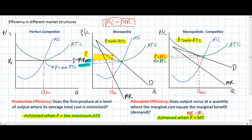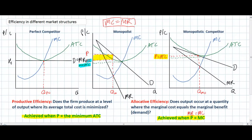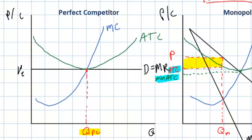Because there are barriers to entry and products produced by imperfect competitors are differentiated, firms in those markets are not forced to achieve productive efficiency. Now let's examine allocative efficiency. For the perfectly competitive firm, at the profit-maximizing quantity QPC, the firm's price equals its marginal cost. With free entry and exit, perfectly competitive markets in the long run achieve output where supply equals demand — where the marginal cost of producers equals the marginal benefit consumers receive — the socially optimal quantity. Perfect competitors are allocatively efficient.